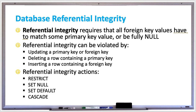There's CASCADE, which makes primary key changes propagate to foreign keys. If you're using CASCADE and a primary key is deleted, rows containing matching foreign keys are also deleted. If a primary key is updated, then matching foreign keys are updated to the same value.